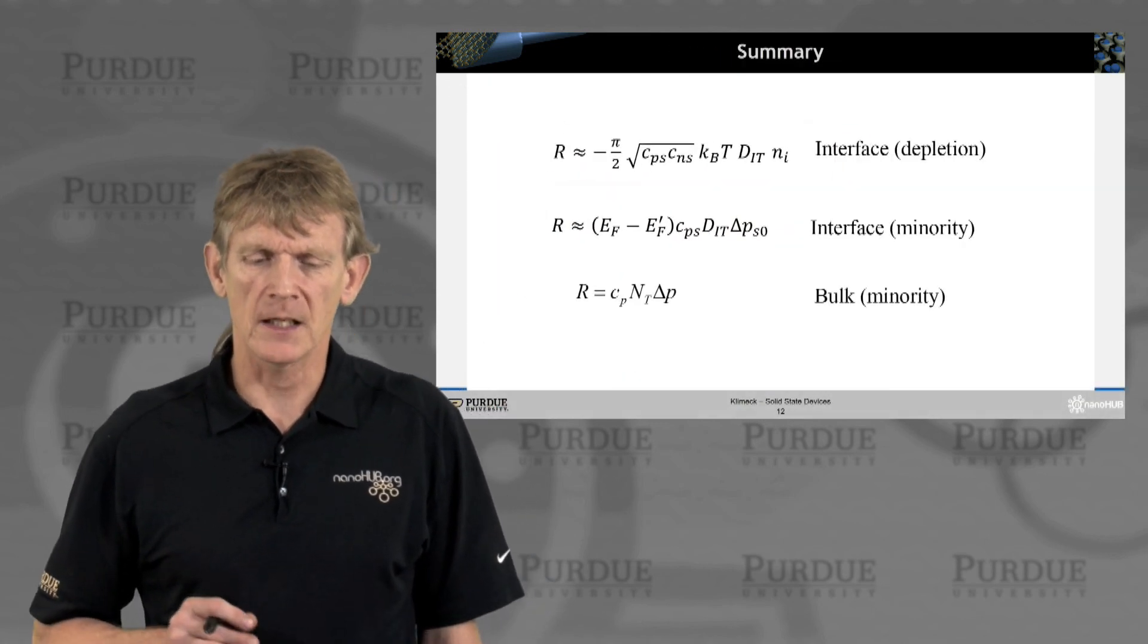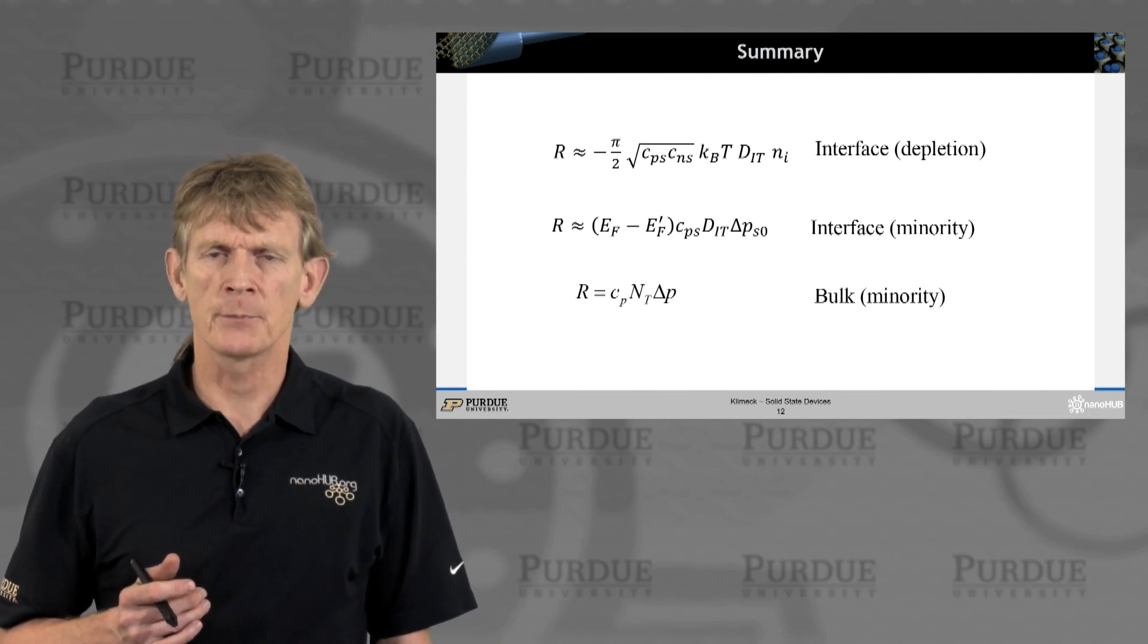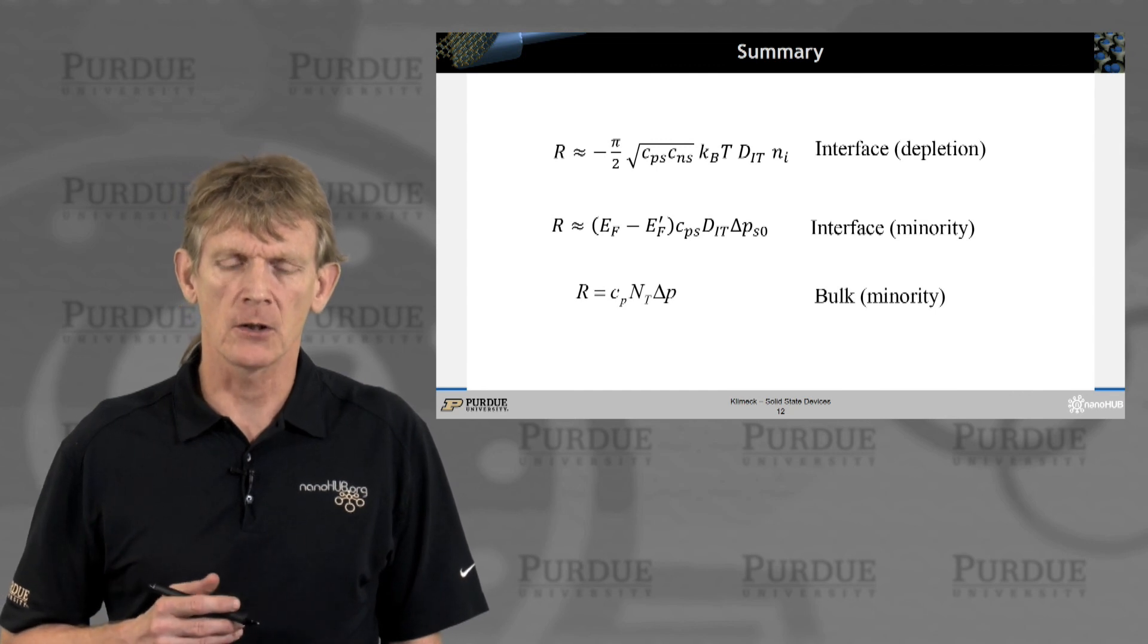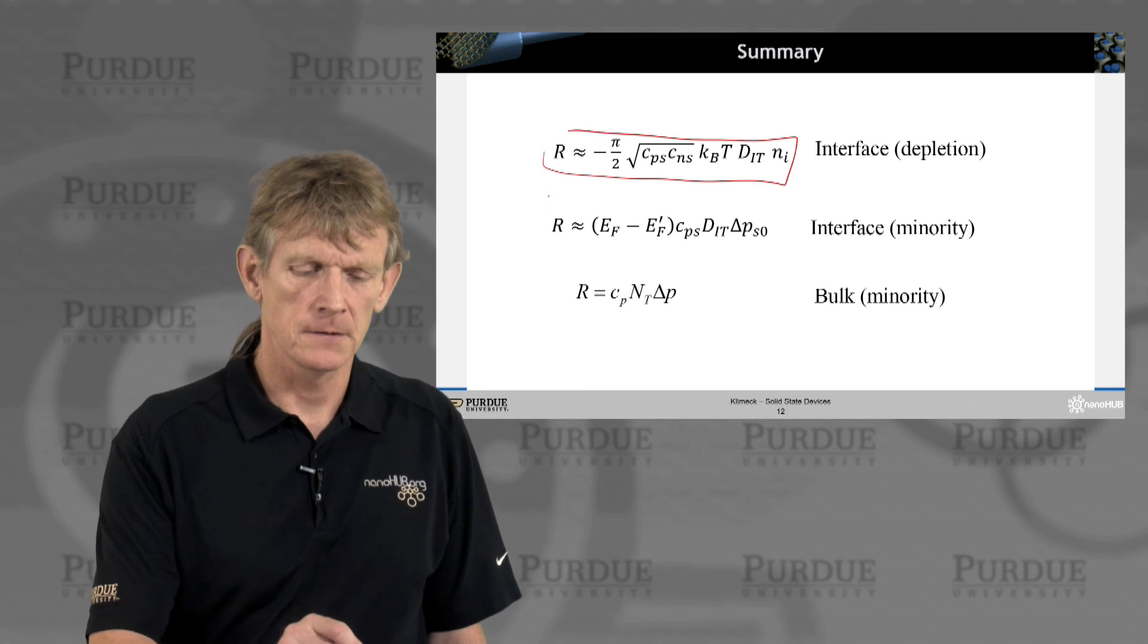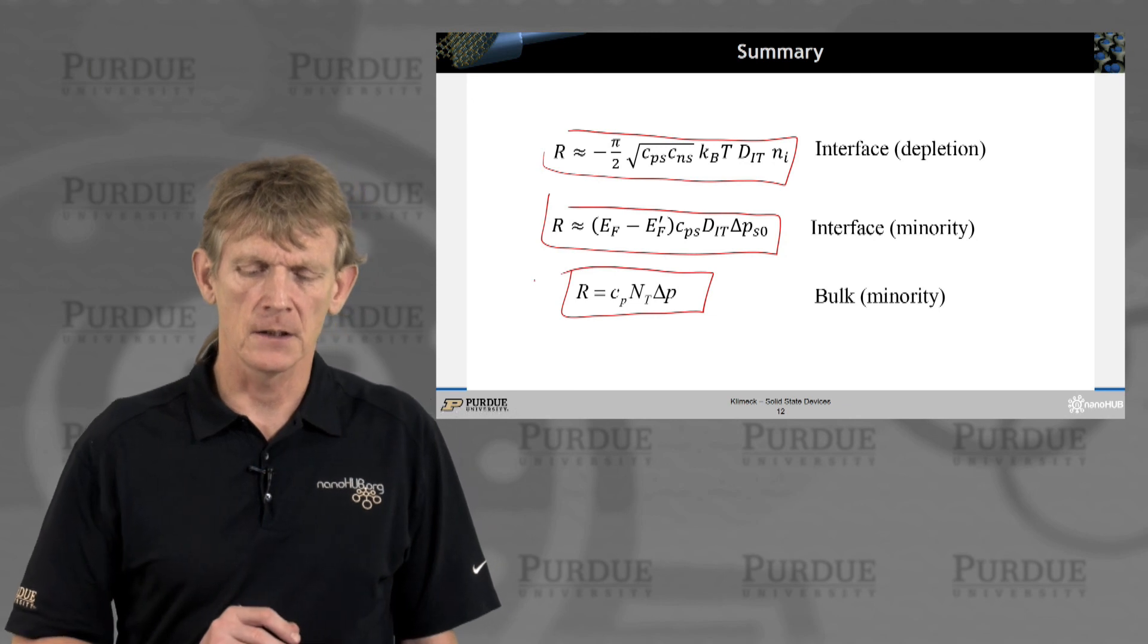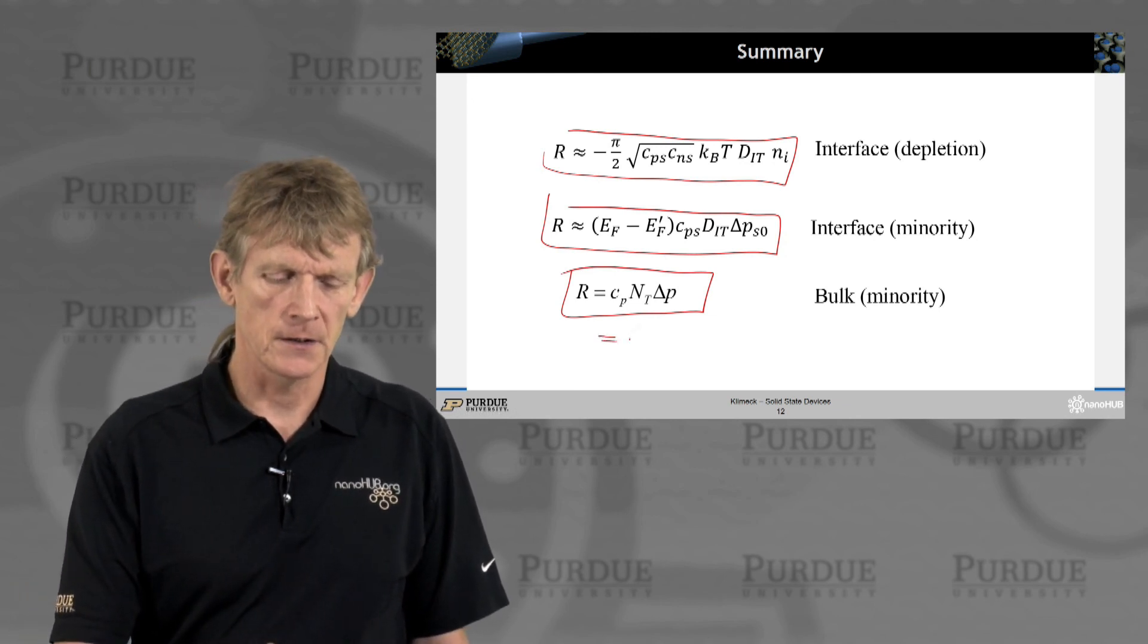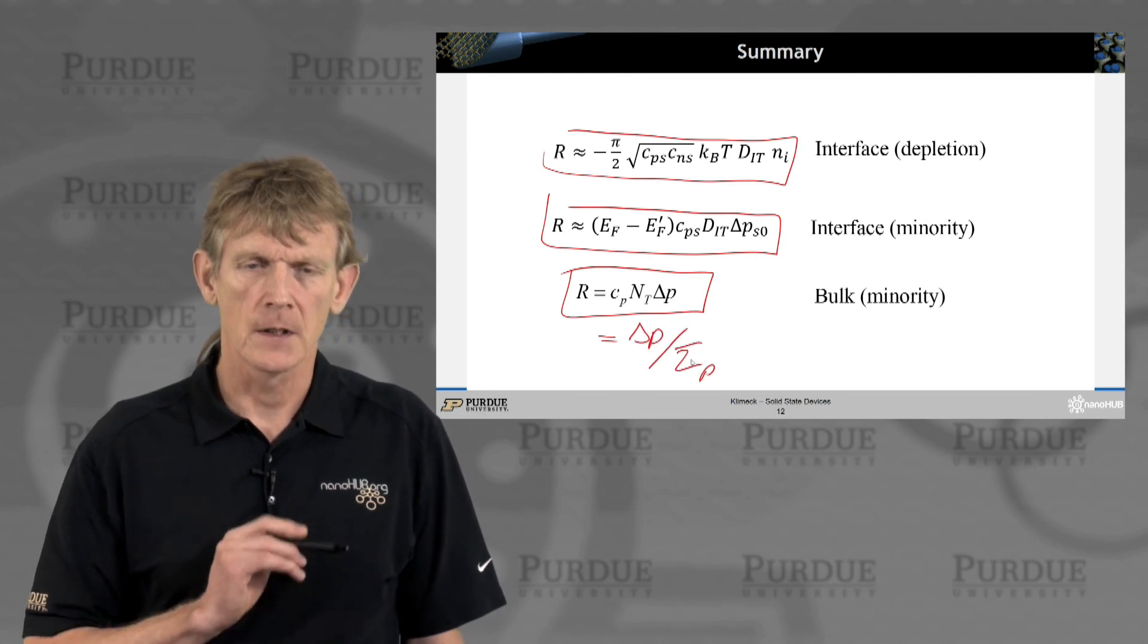Let me conclude this segment here in a summary. We had derived some expressions for trap-assisted recombination at the, this is generation, at the interface recombination of minority carriers. And here's minority carrier recombination in bulk. We also had written this as delta P over tau P.